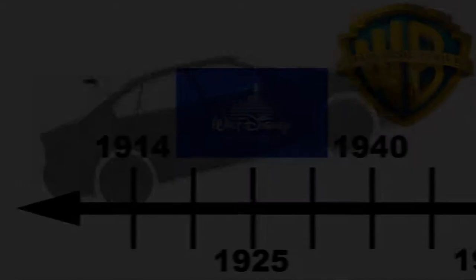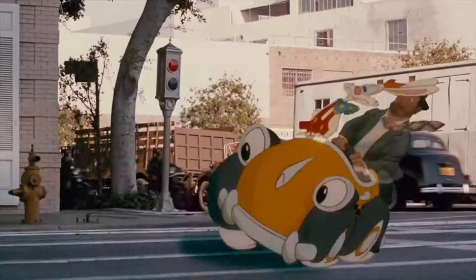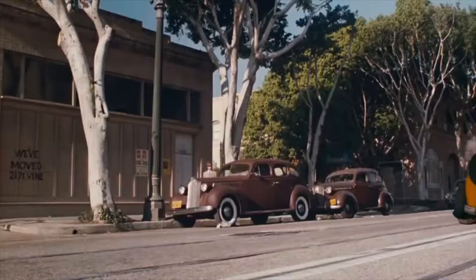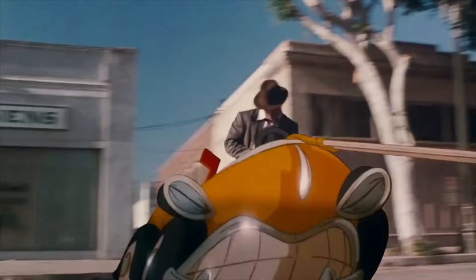Fast forward to 1988. Animation is common and is mostly used in children's television shows and movies. The movie Who Framed Roger Rabbit used animation and film, a technique that would be used increasingly.